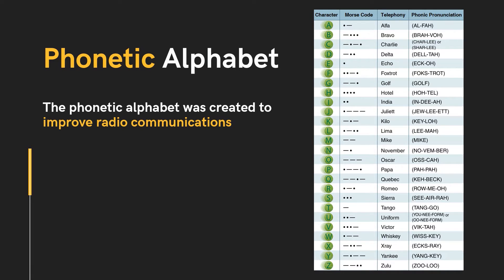Or the numbers five and nine. To eliminate any possible confusion, the phonetic alphabet associates a distinct word with each letter of the English alphabet. A standard system of pronouncing numbers also decreases the possibility of misunderstood radio communications.